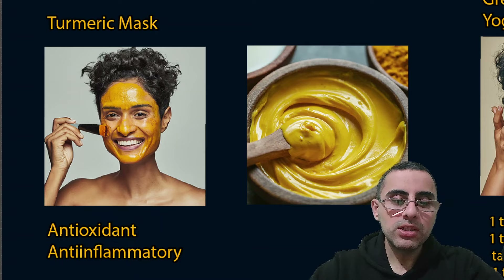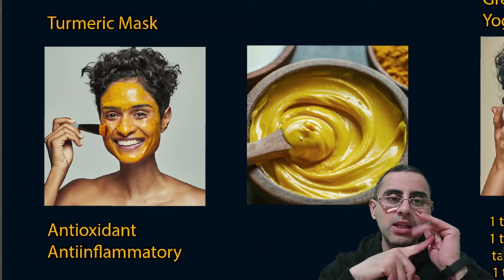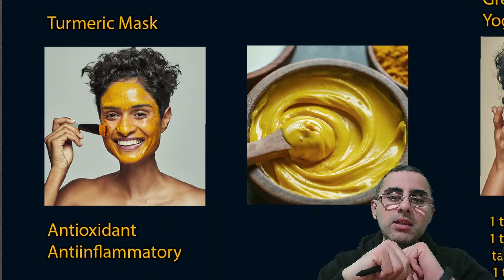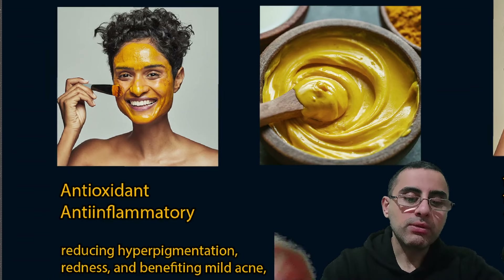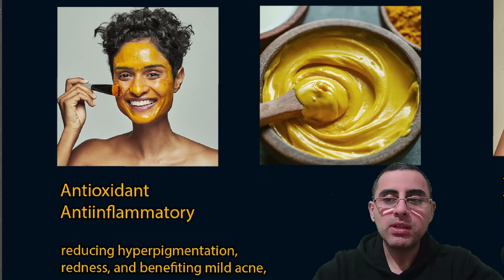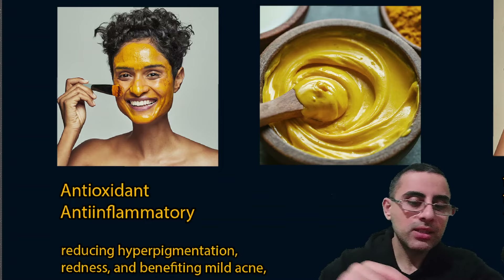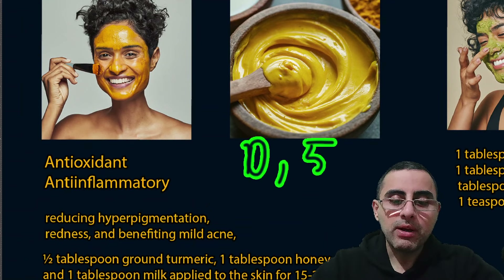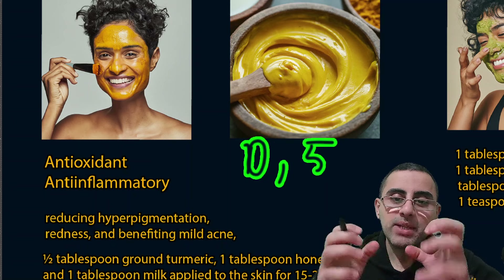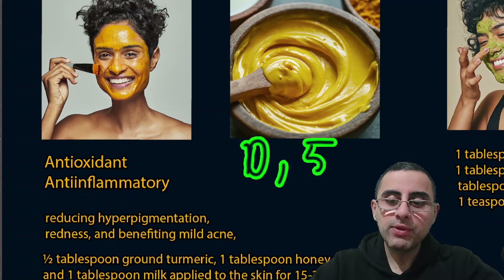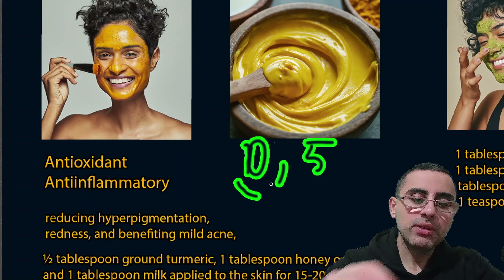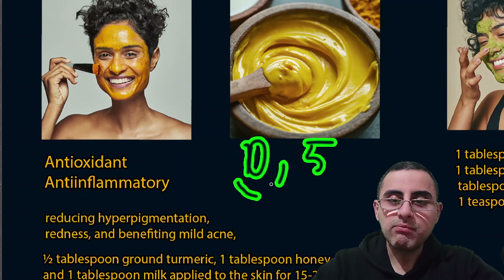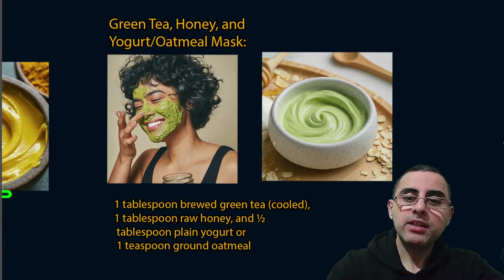Turmeric mask is another important combination, with anti-inflammatory and antioxidant action. It is usually combined with honey and reduces hyperpigmentation, acne, and redness. The recipe is: 0.5 tablespoon ground turmeric, one tablespoon honey or yogurt, and one tablespoon milk. Mix them together and apply to skin for 15 to 20 minutes. Turmeric plus honey plus milk is considered the best combination for your face.